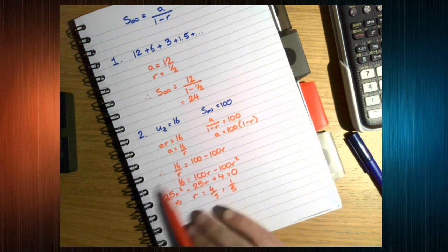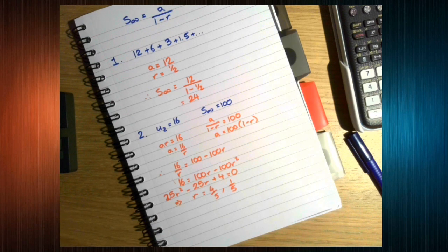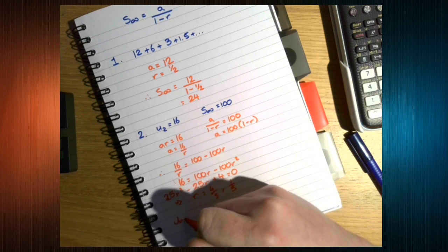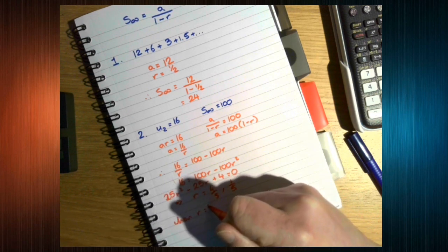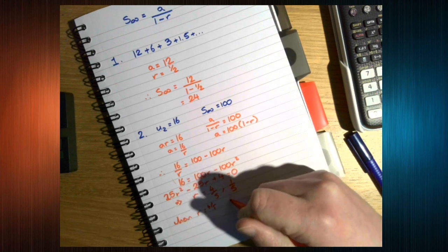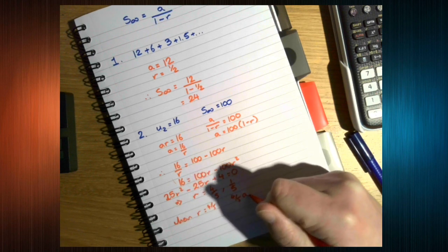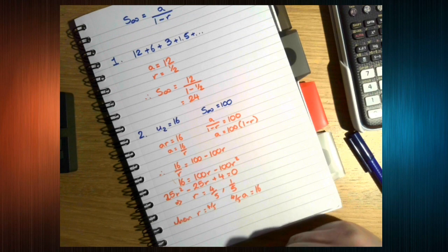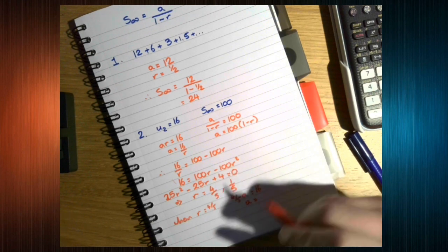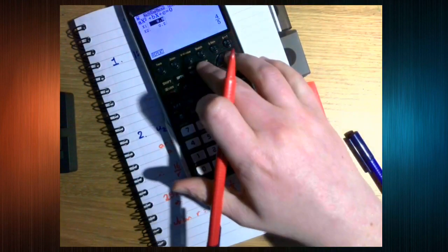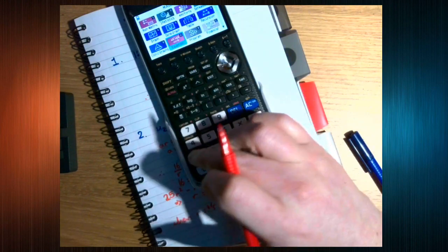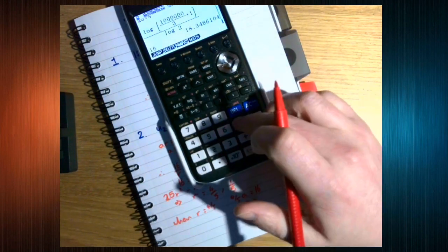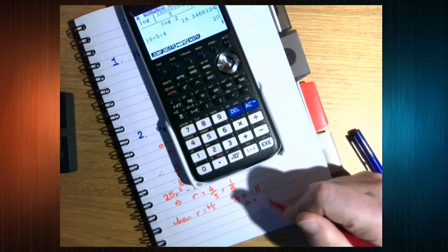We now need to find the corresponding values of a. So, when r is 4 over 5, 4 over 5 a equals 16. 16 a equals 16 times 5 divided by 4, which is 20.